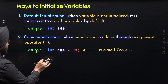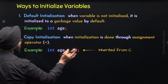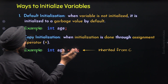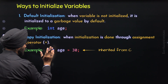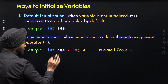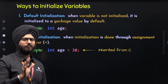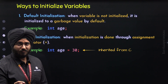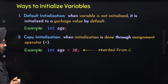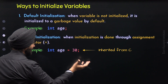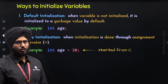The reason Copy Initialization was not recommended prior to C++ 17 is the process it follows. A temporary object of the right-hand side value is created first, then copied to the left-hand side object, and then the temporary object is deleted. This is inefficient for complex types. After C++ 17, Copy Initialization has been improved and the problem reduced greatly.